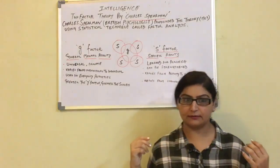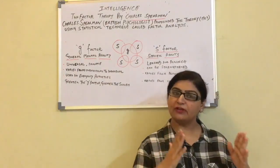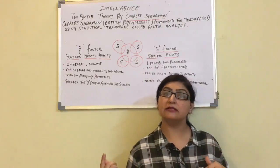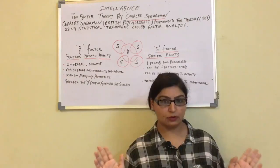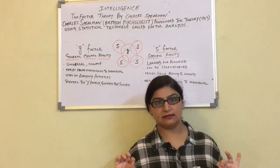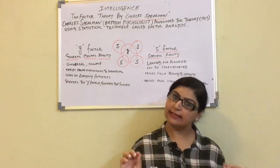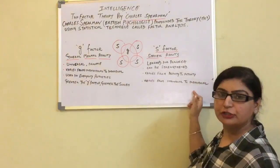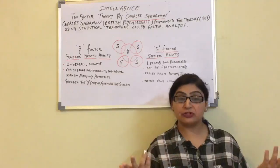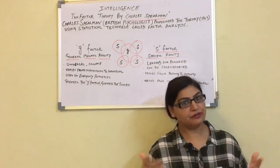S-factor varies from activity to activity in the same individual. For example, if you can compose music very well, it does not necessarily mean you can dance or write poetry very well — it is not compulsory. S-factor also varies from individual to individual. For instance, my sister is a professional volleyball player, my father is a specialized heart surgeon, and my mother is a chef. So it varies from individual to individual.